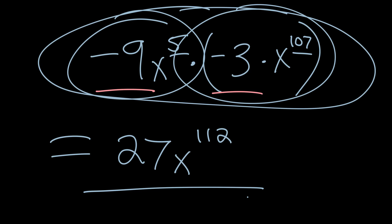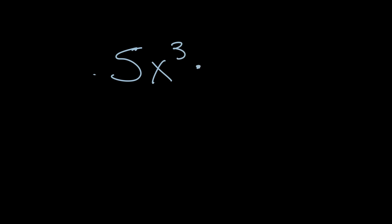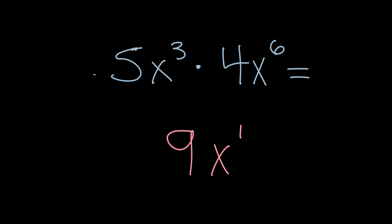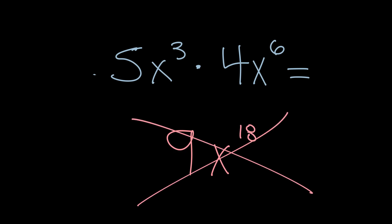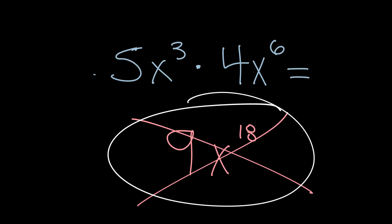I'll leave you with a cliffhanger. Let's look at 5x to the 3rd power times 4x to the 6th power. I'm going to show you a wrong answer a student gave me: they said the answer is 9x to the 18th power. That's wrong. Think about what we've been discussing — what did they do with 5 and 4 to get 9, and what should they have done? What did they do with 3 and 6 to get 18, and what should they have done? That's the challenge for multiplying monomials.